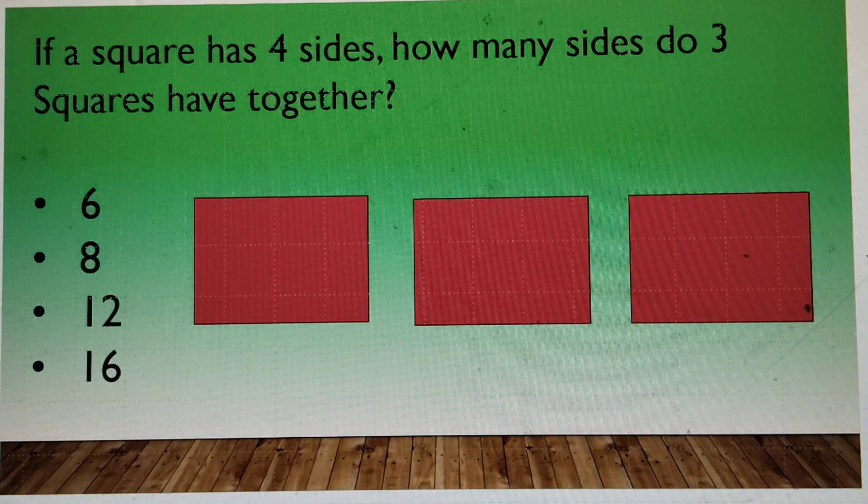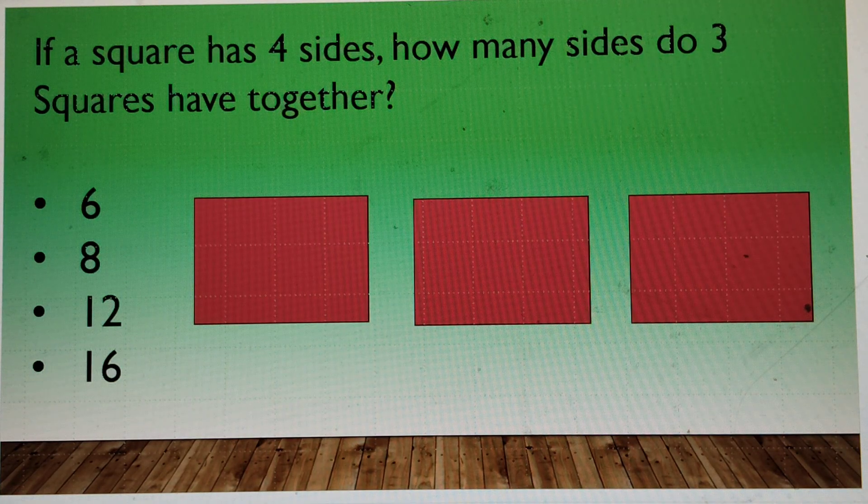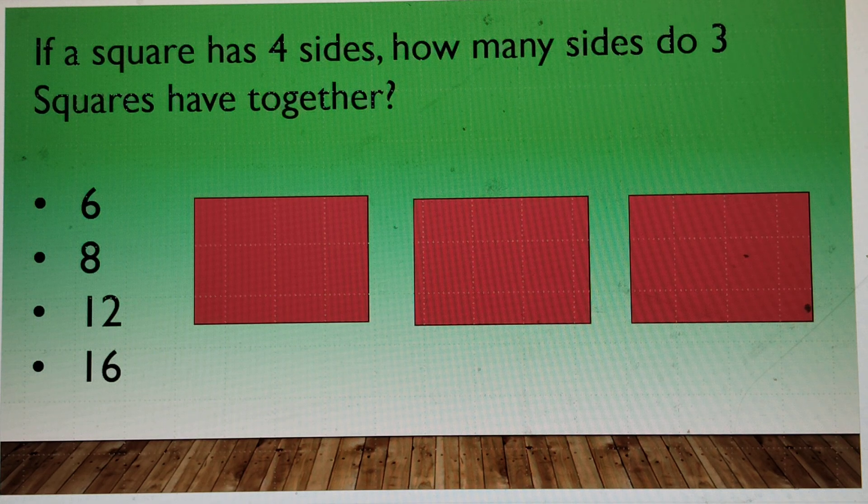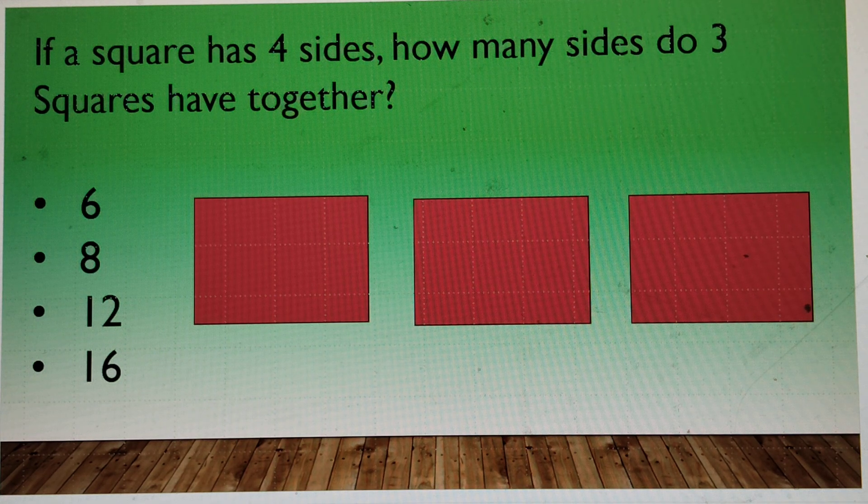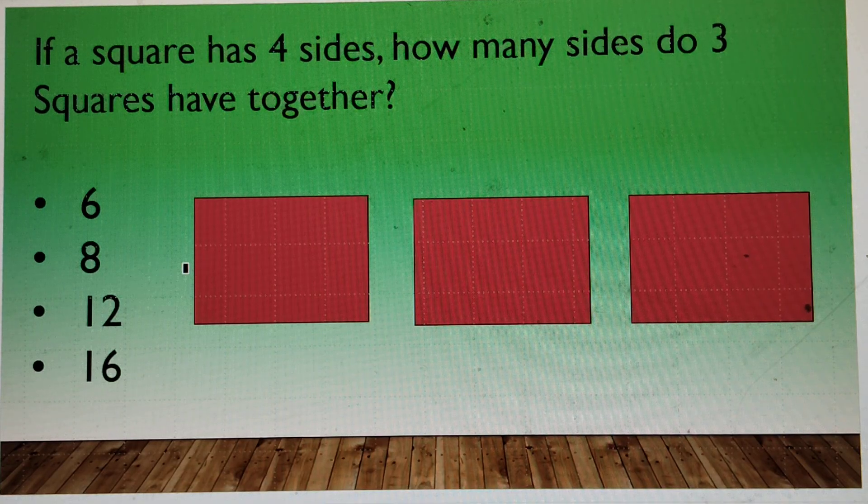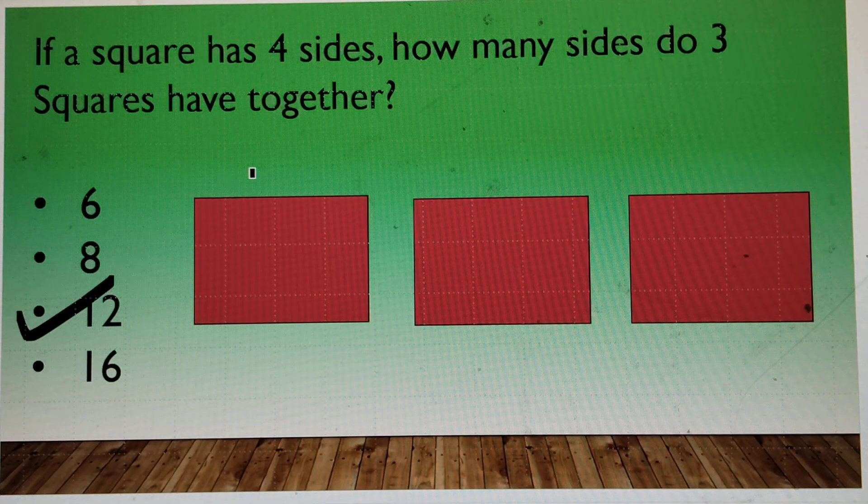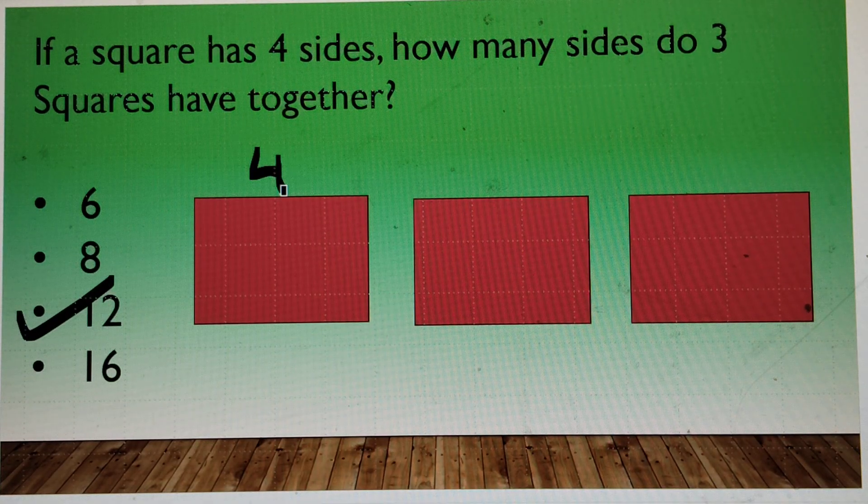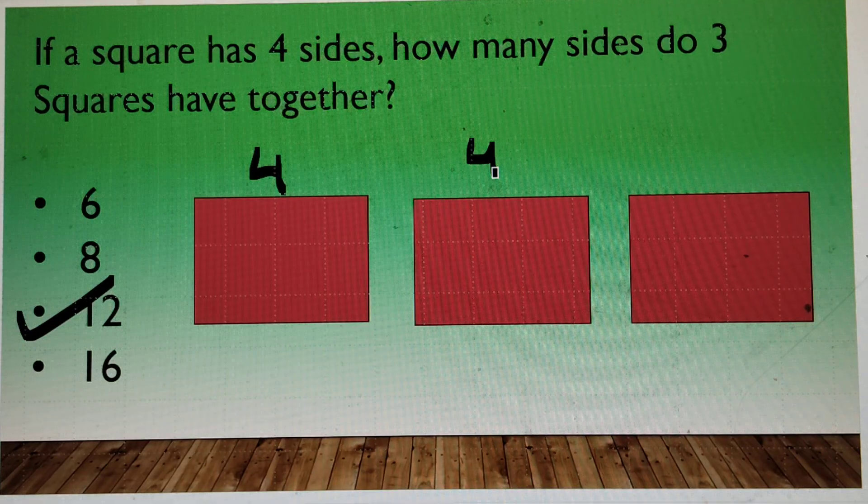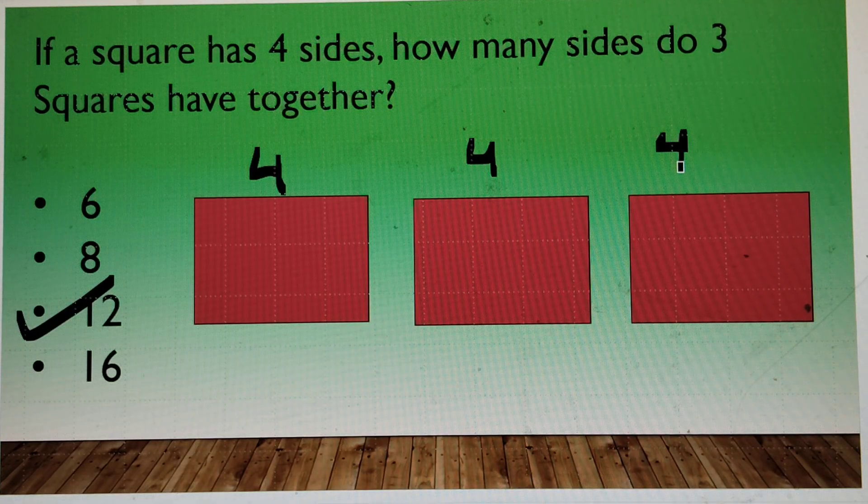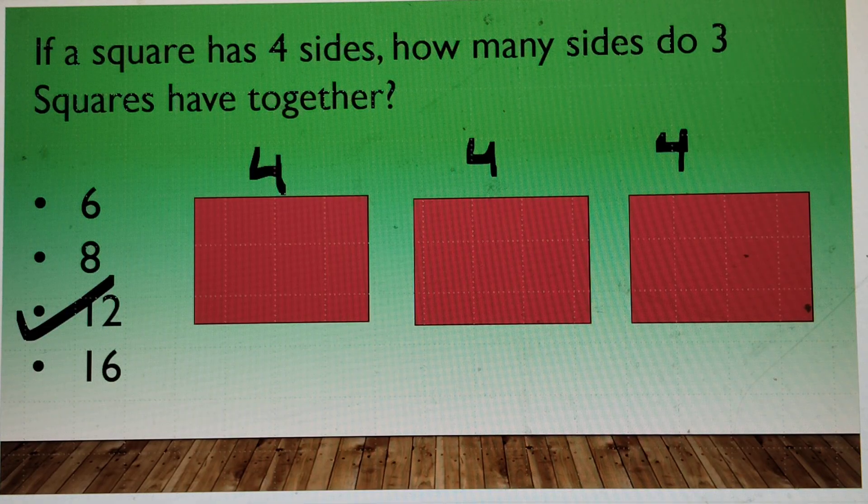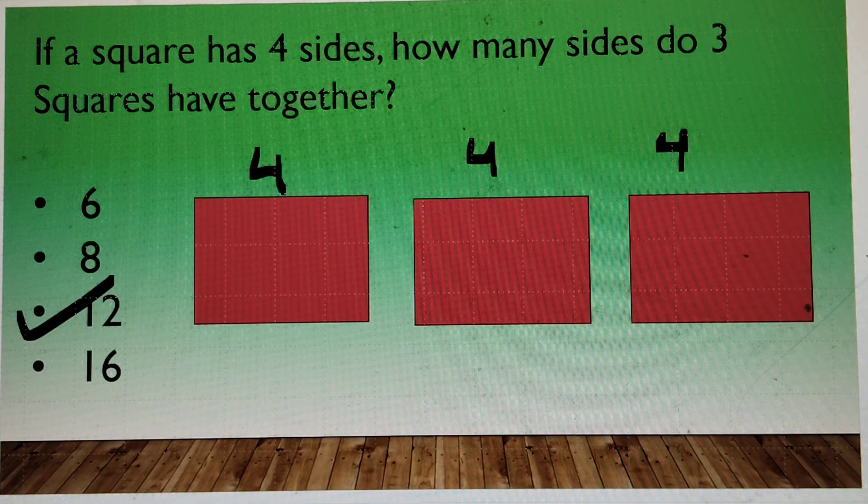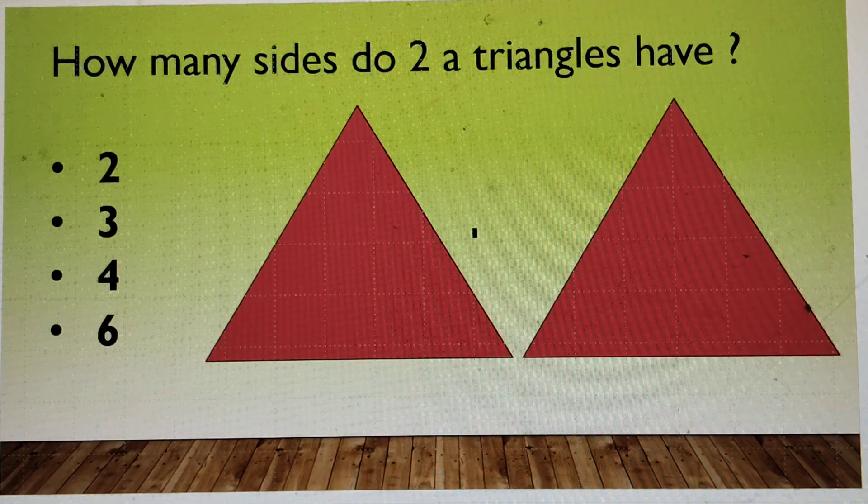Now, if you have a square, square has 4 sides and how many sides do 3 squares have together? 6, 8, 12 or 16? 12. 12. 4, 4, 4 and this one also has 4. So, 4 add 4 and 4 is 12. You answered it correctly.